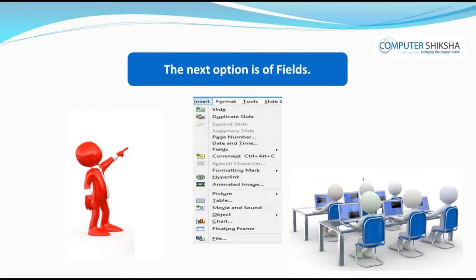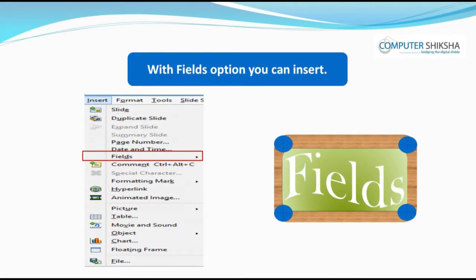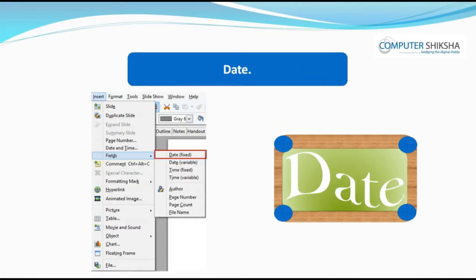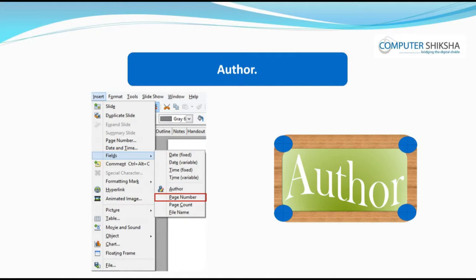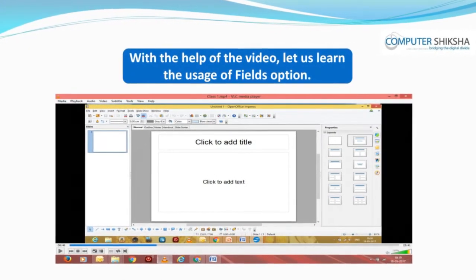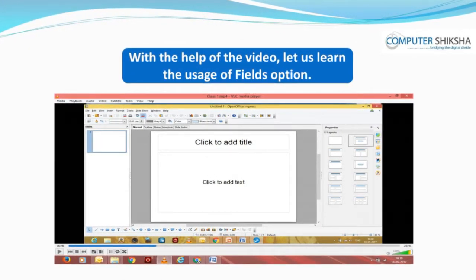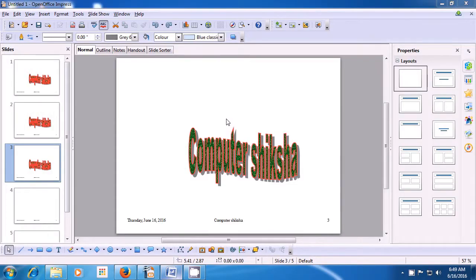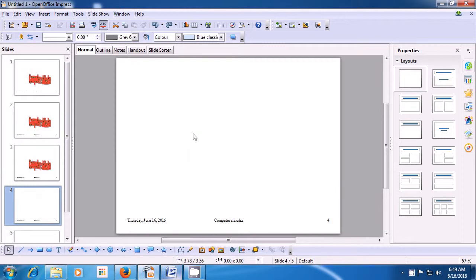The next option is of Fields. With the Fields option, you can insert date, time, author, etc. To use this, go to the Insert menu and from the options available, come to Fields option. You see: Date, Time, Author, Page Number, File Name. If you click on Date, a fixed date gets inserted — you can drag this to the desired position.